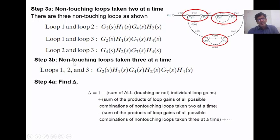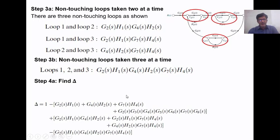Going further, we write loop gains for non-touching loops taken three at a time. Since we have three loops, we combine loop one, two, and three together and write all their gains. We then find delta using the formula: delta equals 1 minus the sum of all individual loop gains, plus the sum of loop gain products taken two at a time, minus the sum taken three at a time.